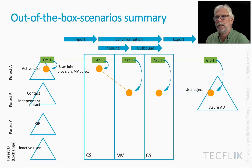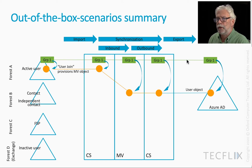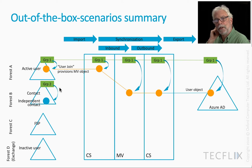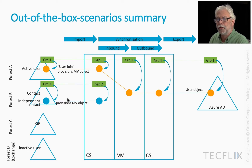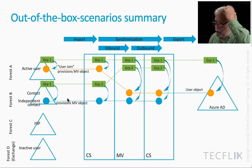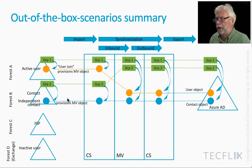Let's look at some of these out-of-the-box scenarios in a bit more detail. We've got our active user in our first forest. It may also be that we've got a contact — quite an independent contact — sitting in any of the forests. In Forest B, we've got an independent contact that is a member of a group, a distribution list presumably. We can import that, and a rule provisions the metaverse object for both the contact and the group. They flow through, and we end up with a contact object in Azure AD — a perfectly normal, totally independent state of affairs.